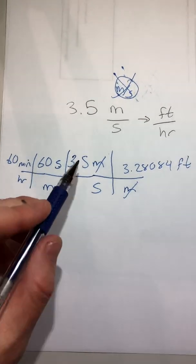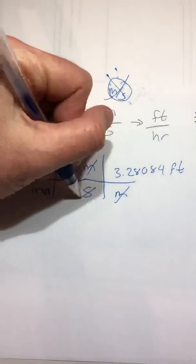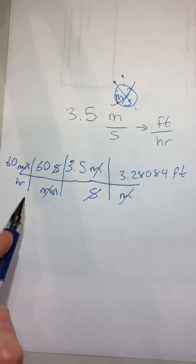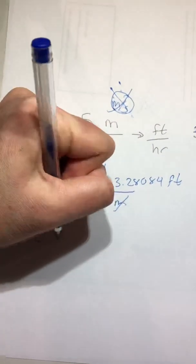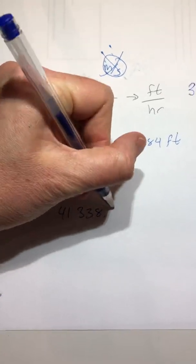So now we have 60 times 60 times 3.5 times 3.28084. Meters cancel, seconds cancel, minutes cancel, and our resulting unit are feet over hours. If you calculate this out, you get 41,338.6.